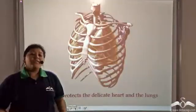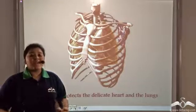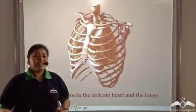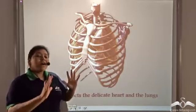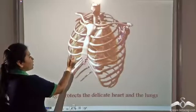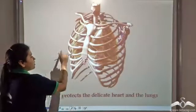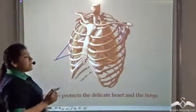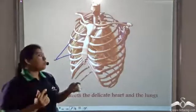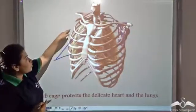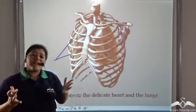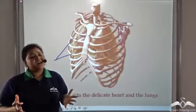To protect our internal delicate organs like the lungs and the heart, we have a bony cage-like structure known as the ribcage. The ribcage is made up of rigid bones — this is one bone, this is another bone — and bones are very hard and rigid.